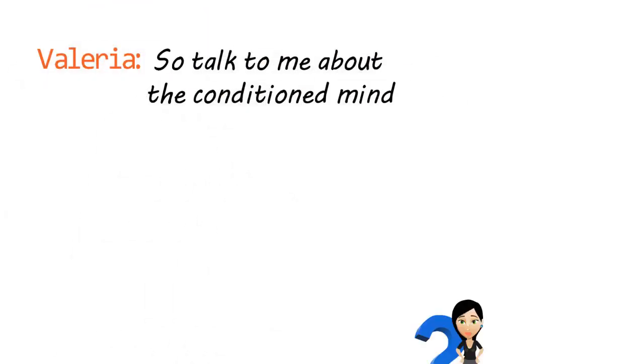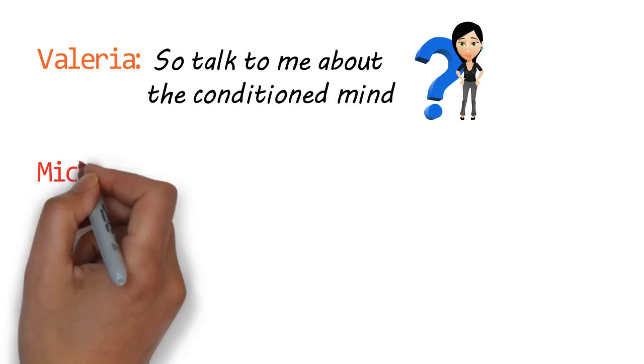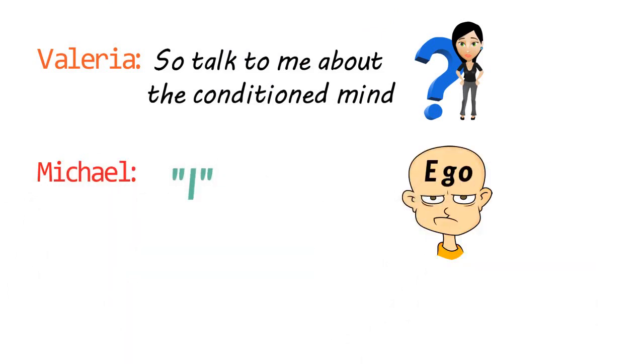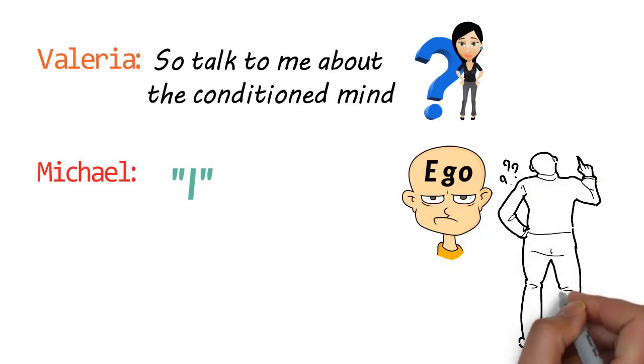So talk to me about the conditioned mind. What is it? There's this 'I'—people call it the ego, but I call it simply 'I' because the ego can have a lot of different interpretations, but I is I.